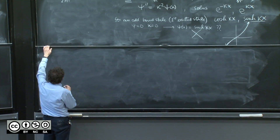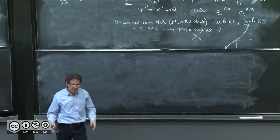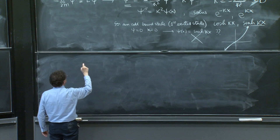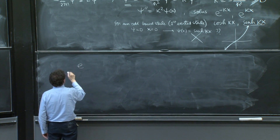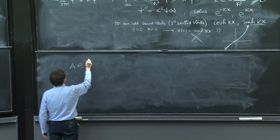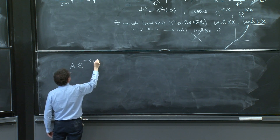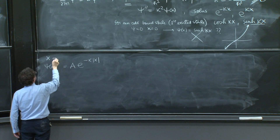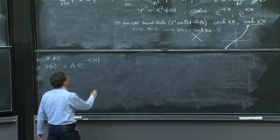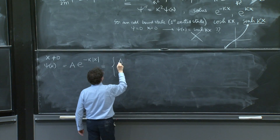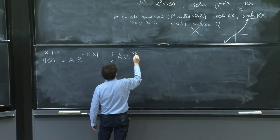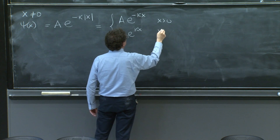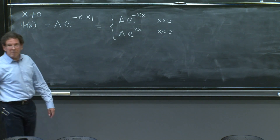So what is the wave function that we have? We must have a wave function that is symmetric, built with e^(κx) and e^(-κx). The only possibility is e^(-κ|x|). This is ψ(x) for x different from 0. This is e^(-κx) when x is positive, and A·e^(κx) when x is negative. And both of them decay.